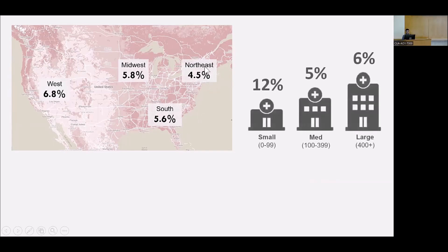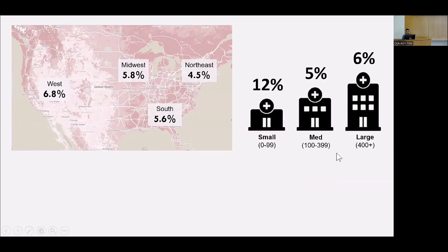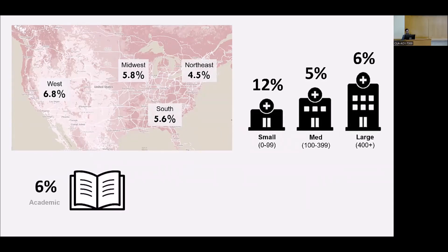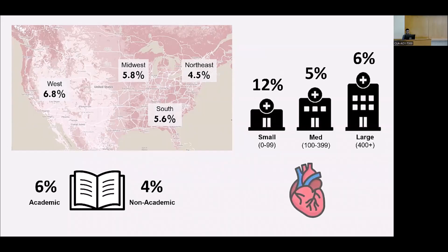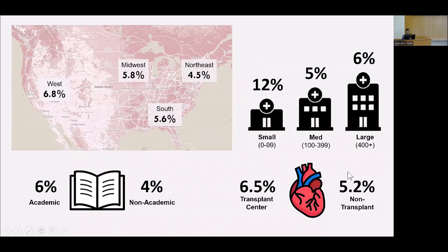Overall in the cohort, five percent were transferred. There were some slight geographic differences, with transfer being more common in the West and a little less common in the Northeast. Small hospitals received a higher proportion of transfers compared to medium hospitals, and large hospitals were slightly higher also. Academic centers were slightly higher — six versus four percent — and similar trends at transplant versus non-transplant centers, six and a half versus five point two percent. The rate of transfer hovered between five and six percent over the last seven years without any significant variability.